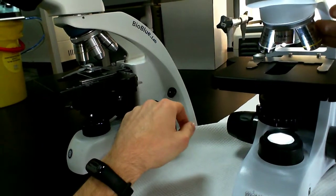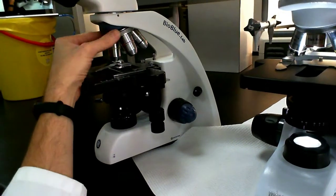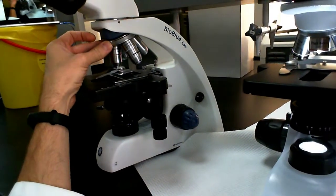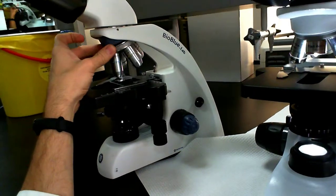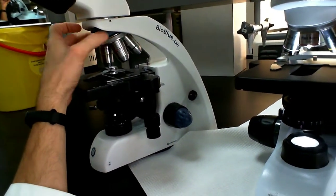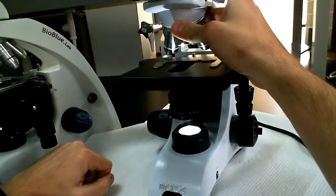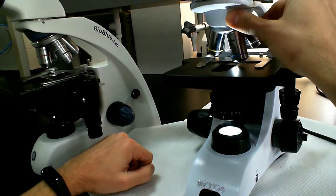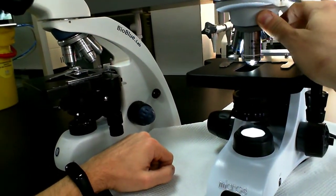So again, objective lenses here, objective lenses on this microscope as well. They are mounted on a revolving nose piece or a turret, so they can be rotated in place. So they can change magnifications whenever you need to. Same idea here. Again, we have a 4x, 10x objective, a 40x objective, and a 100x objective.